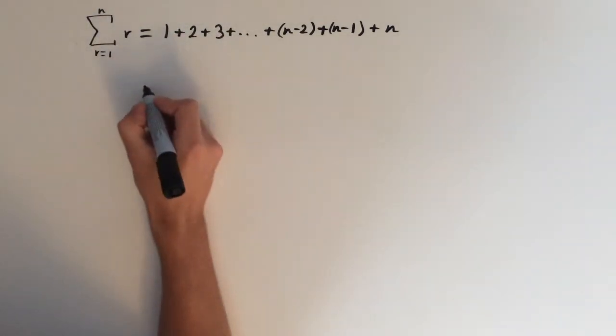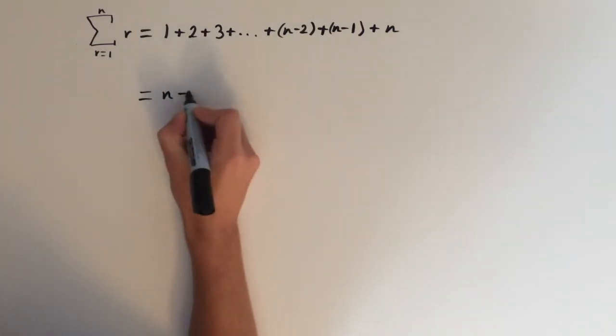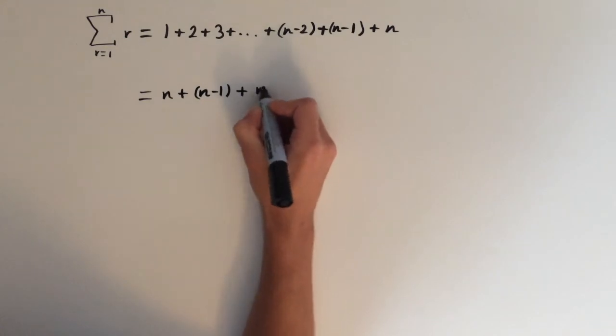What we can do is write the series out backwards. This is going to give us n plus n minus 1 plus n minus 2, all the way down to 3 plus 2 plus 1.